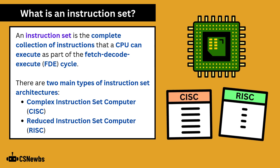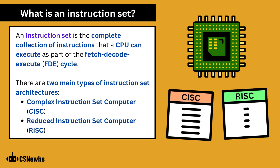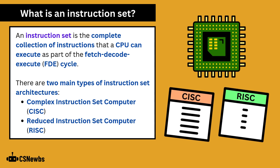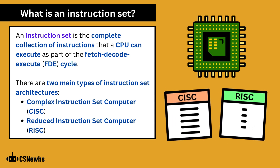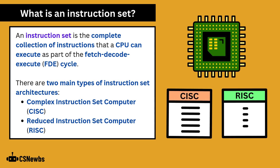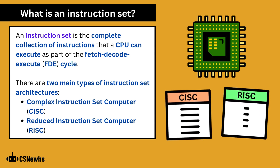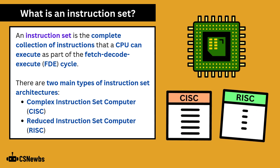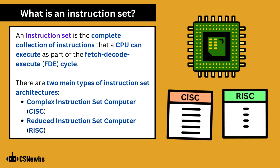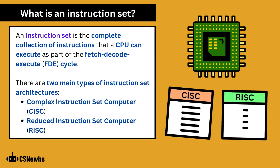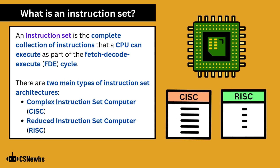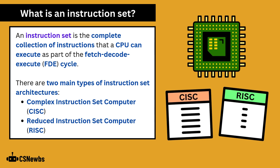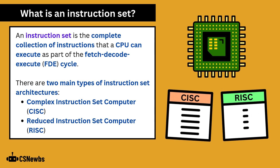An instruction set is the complete collection of instructions that a CPU can execute as part of a fetch to decode execute cycle. There are two main types of instruction set architectures: complex instruction set computer, which is CISC, or reduced instruction set computer, which is RISC.